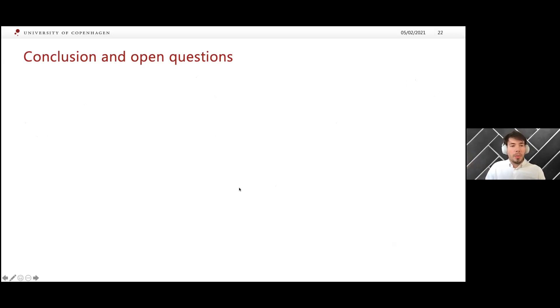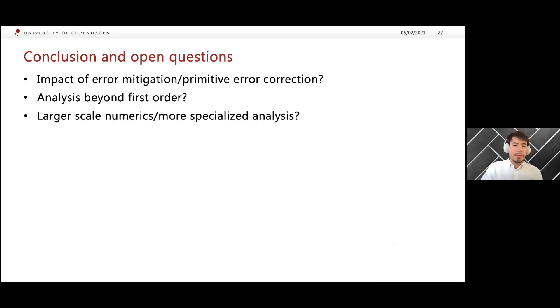There are also some open questions left. For instance, what is the impact of error mitigation or primitive error correction schemes on our results? Most of the results I've shown you just concern the expectation value of the output. This is like a first-order analysis. It would also be interesting to obtain concentration inequalities for the outputs of such circuits, which is something we are currently working on.